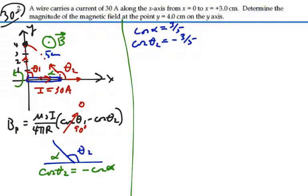So based on that, we now have the magnetic field at point P is equal to mu-naught, which is four pi times ten to the minus seven, times the current, which is 30 amps, over four pi.